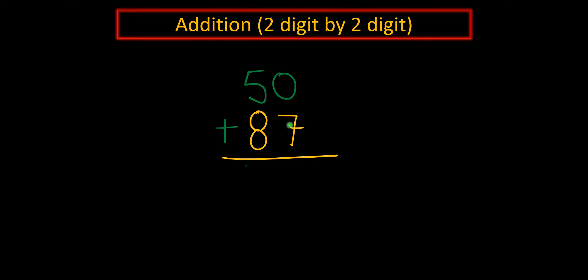The first thing we need to do is add 0 and 7. So let's do that. 0 plus 7 is going to be 7, because 0 plus any number is just the same number. Now we have to add 8 and 5. 8 plus 5 is going to be 13. So our answer is going to be 137.